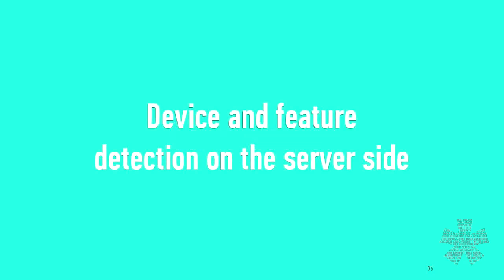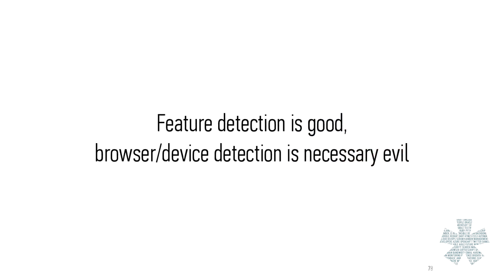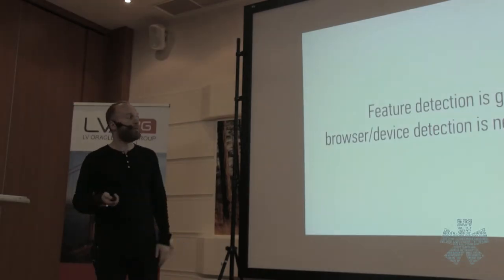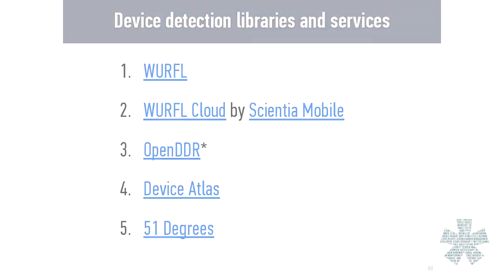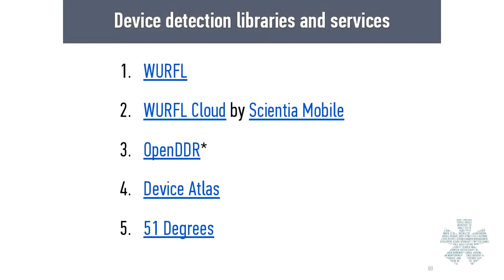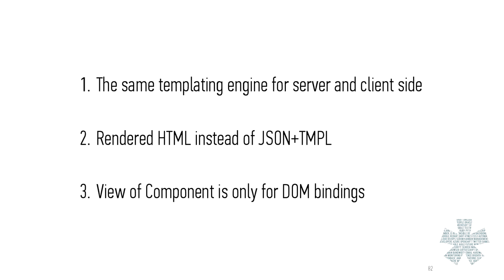What we can improve in this architecture: we can go to the server side. Everyone knows that your browser lies to you every day — client-side device detection is unreliable. The more experienced a mobile web developer is, the more they rely on server-side browser detection. We can use a lot of libraries to make device detection work — like WURFL, OpenDDR, and others, some of which are open sourced. We can also do template rendering on the server side — we pass HTML instead of data and template; it's not so flexible but will work faster in some situations.